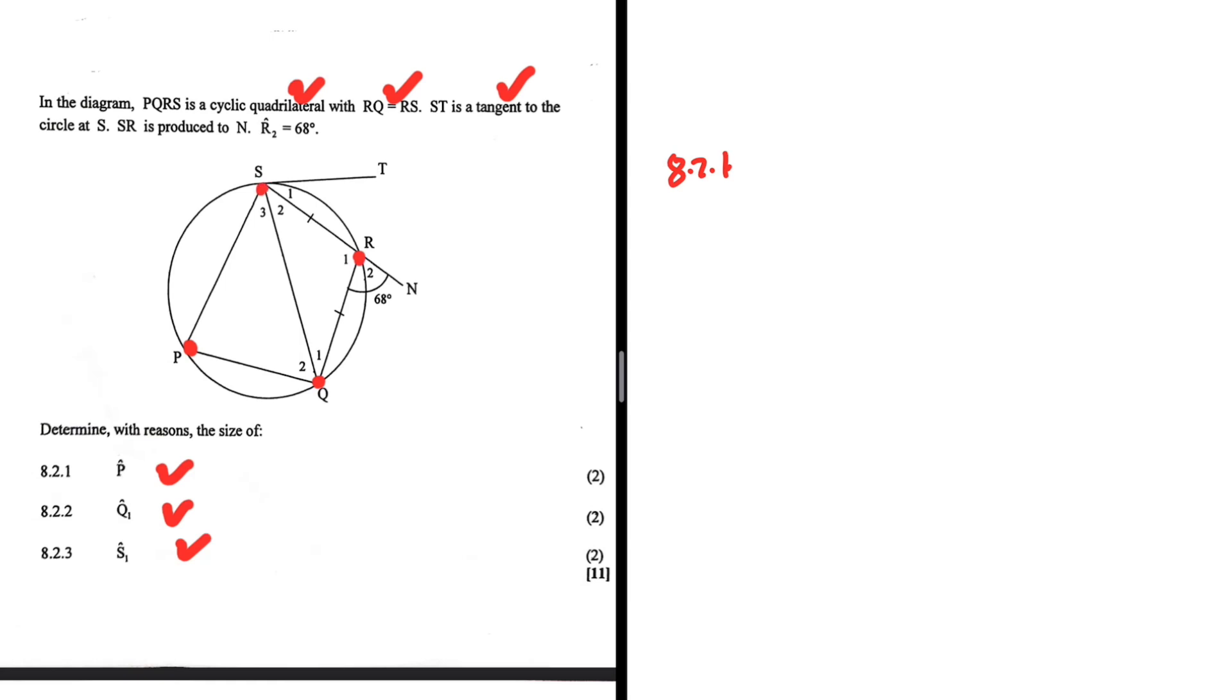If that is the case, angle R2 should be equal to angle P. Exterior angle of a cycling quad is equal to opposite interior. So R2 equals angle P for the reasons I've given. So angle P equals 68 degrees. That is 8.2.1.